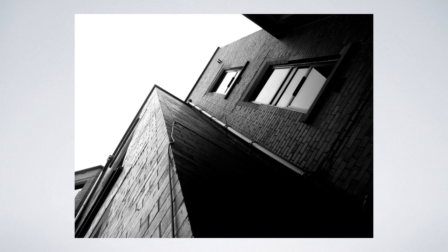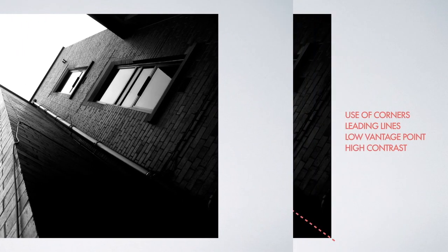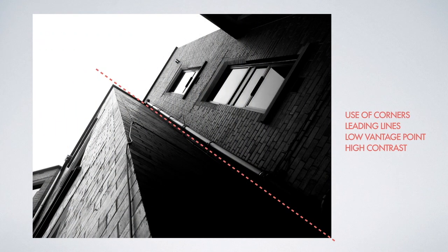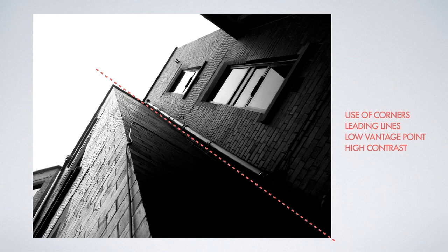This photograph uses a lot of very effective compositional techniques. There's a strong use of corners — the angle you take the photograph from helps create those corners. Use of corners is a technique used by photographers to compose exciting and dynamic images. The leading lines are the lines that shoot across the page, drawing you through the image and creating a rhythm. Both the use of corners and the leading lines are helped by this low vantage point — getting right down below the building helps exaggerate the height and the steepness of the building.